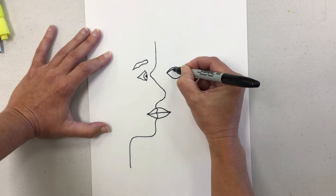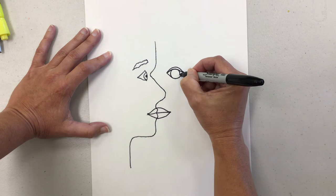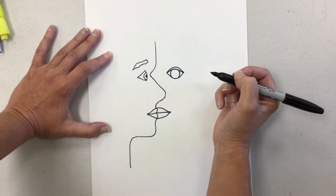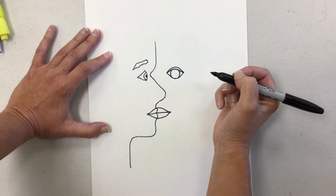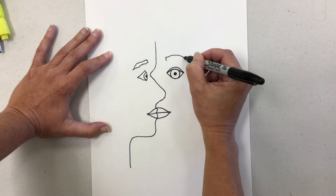Think of your iris, the colored part of your eye, like a marble, a circle, and you don't quite see the top or bottom. Then I put in my pupil. I have a black marker, so I'm going to color it in.